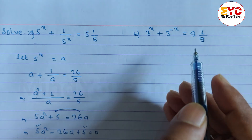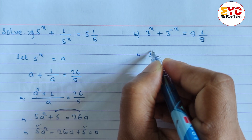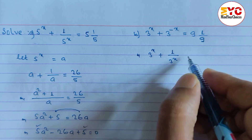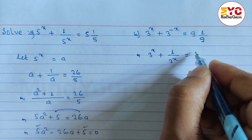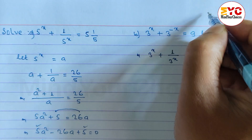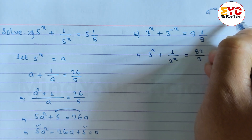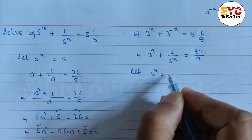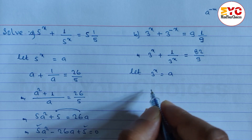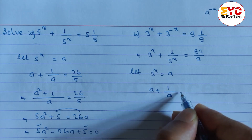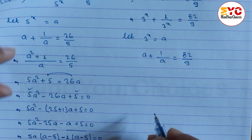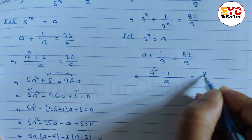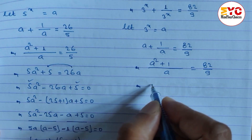Now look at question B: 3 power x plus 3 power minus x equals 9 and 1/9. First we rewrite: 3 power x plus 1 divided by 3 power x equals 82 divided by 9, using the rule a power minus m equals 1 by a power m. Let 3 power x equal to a. Take LCM: (a squared plus 1) over a equals 82 divided by 9.